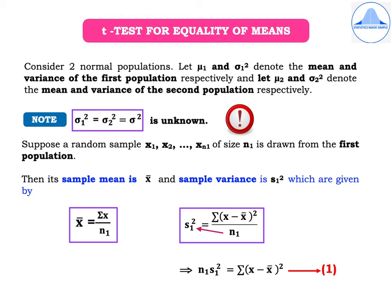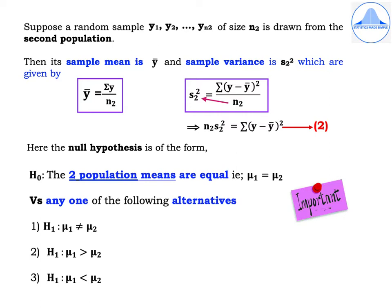Note that x̄ and s1² are lowercase alphabets. Now let us consider a random sample y1, y2, ..., yN2 of size N2 drawn from the second population. Its sample mean is ȳ and sample variance is s2², given by ȳ = Σy / N2 and s2² = Σ(y − ȳ)² / N2. Cross-multiplying, we get N2·s2² = Σ(y − ȳ)², denoted as equation 2.